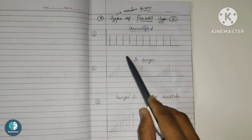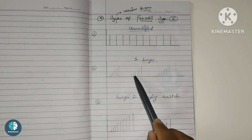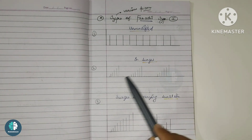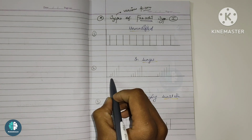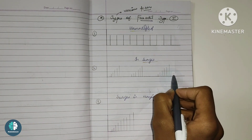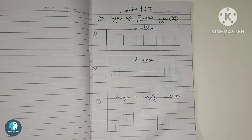Next is the surged faradic type. This waveform has surges in between. Since the faradic type current is a short duration current, it causes tetanic contractions. When we provide relaxation intervals between the tetanic contractions, we get surges. This is how the waveform looks when relaxation or surges are introduced in the faradic type current.